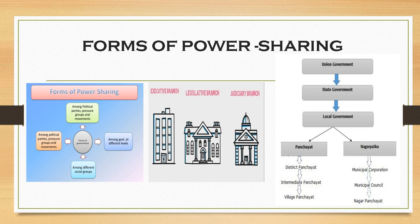Let us try to understand it with the example of India. In India, you have three levels of government basically. You have one union government, that is your central government — the main government. Then you have the state government — the various state governments at the state level. Then within the state government, you have the local government, which consists of Panchayat in the rural areas and Nagarpalika in the urban areas.